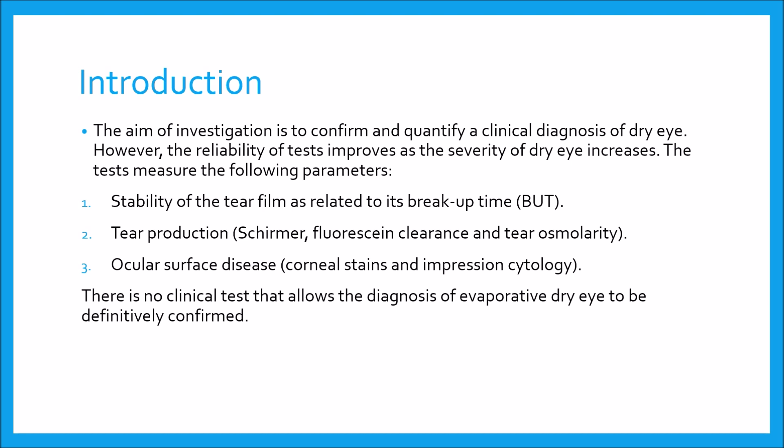The tests measure the following parameters. Number one, stability of the tear film as related to its breakup time, abbreviated as BUT. Number two, tear production, measured by Schirmer, fluorescein clearance, and tear osmolarity tests. Number three, ocular surface disease, which is assessed by corneal stains and impression cytology.